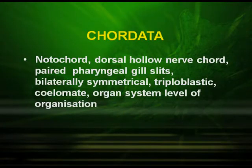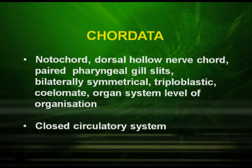Now, what are the characteristics of chordates which distinguish them from non-chordates? Chordates have a notochord. It is a dorsal hollow nerve cord. They also have paired pharyngeal gill slits and their body is bilaterally symmetrical. They are triploblastic, coelomate, and have organ system level of organization. Circulatory system is of closed type — all organisms under chordates have blood vessels, that is, they have arteries, veins, capillaries, etc.